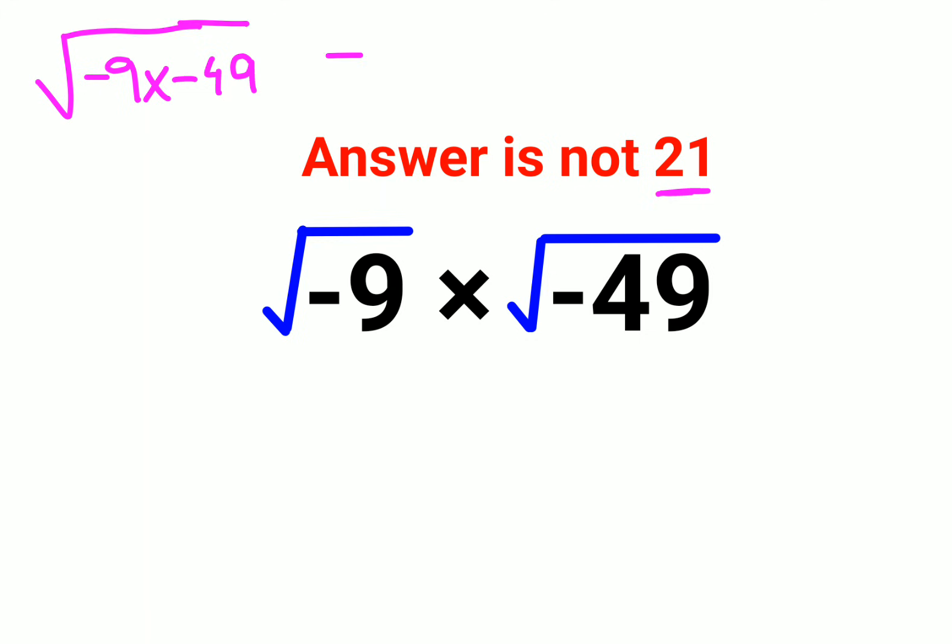When you multiply two negative numbers, the product will be a positive answer, right? And when you take 9 and 49 out of the root, you get 3 and 7, and from there you should get the answer as 21.